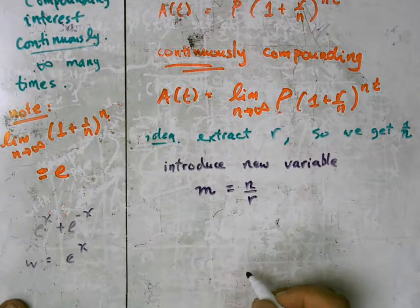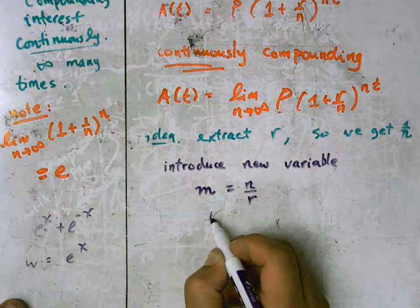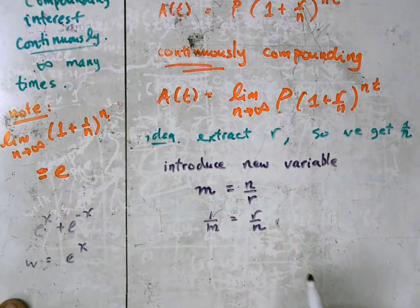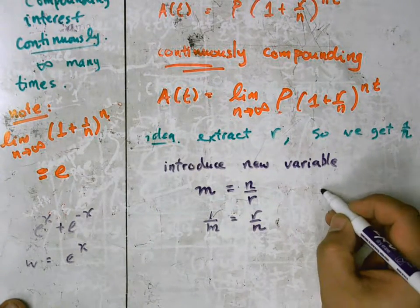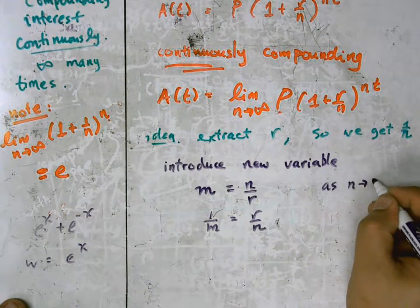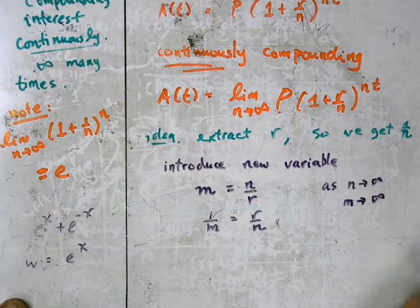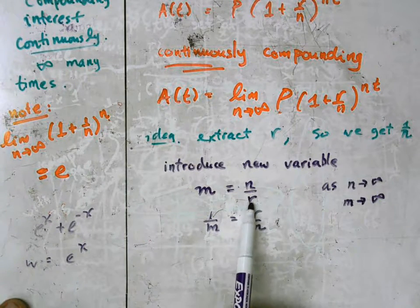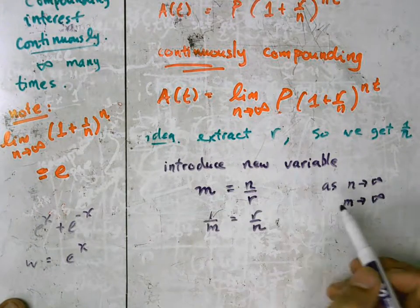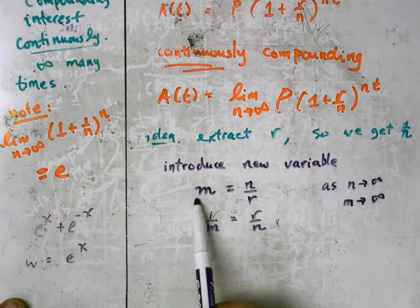And since m equals n over r, I can say some other things too. I can take the reciprocal of both sides: 1 over m equals r over n. Notice how this is very useful here. And we can also say that as n approaches infinity, m also approaches infinity. Since r is a constant, as n gets bigger, we know that m will get bigger too.